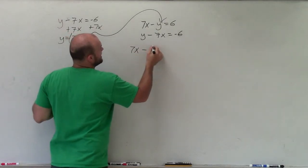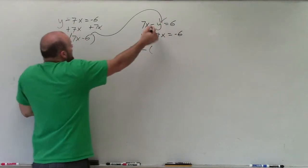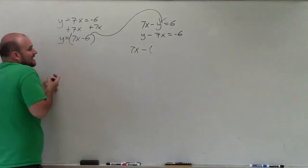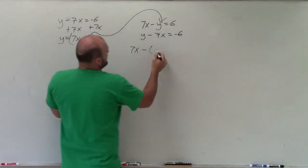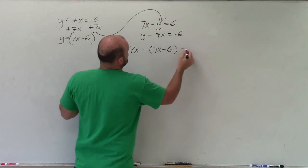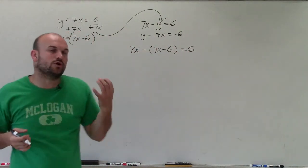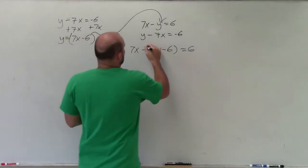So therefore, I have 7x minus, rather than y, y is equal to 7x minus 6. These are interchangeable, right? So that's 7x minus 6 equals 6. You could also write y, but again, we want to write an equation which only has x's so we can solve.